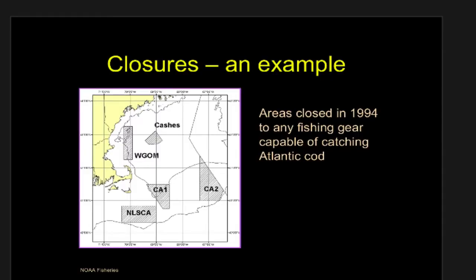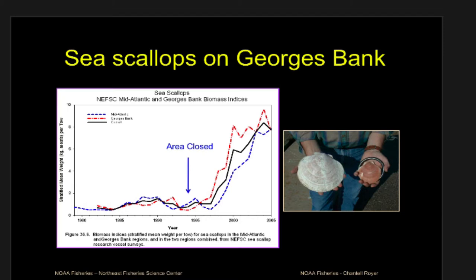Closures are really obvious — we set up an area and say you can't go and take stuff out of here. We'll talk more about closures when we discuss marine protected areas. But closures can be very powerful. If we have not knocked the system into an alternative stable state, these are life forms — they will reproduce if they have the right nutrients, the right habitat, the right water. If we just stop our negative pressure, the population hopefully will be able to self-recover. That's the philosophy behind closures, or marine protected areas, MPAs.